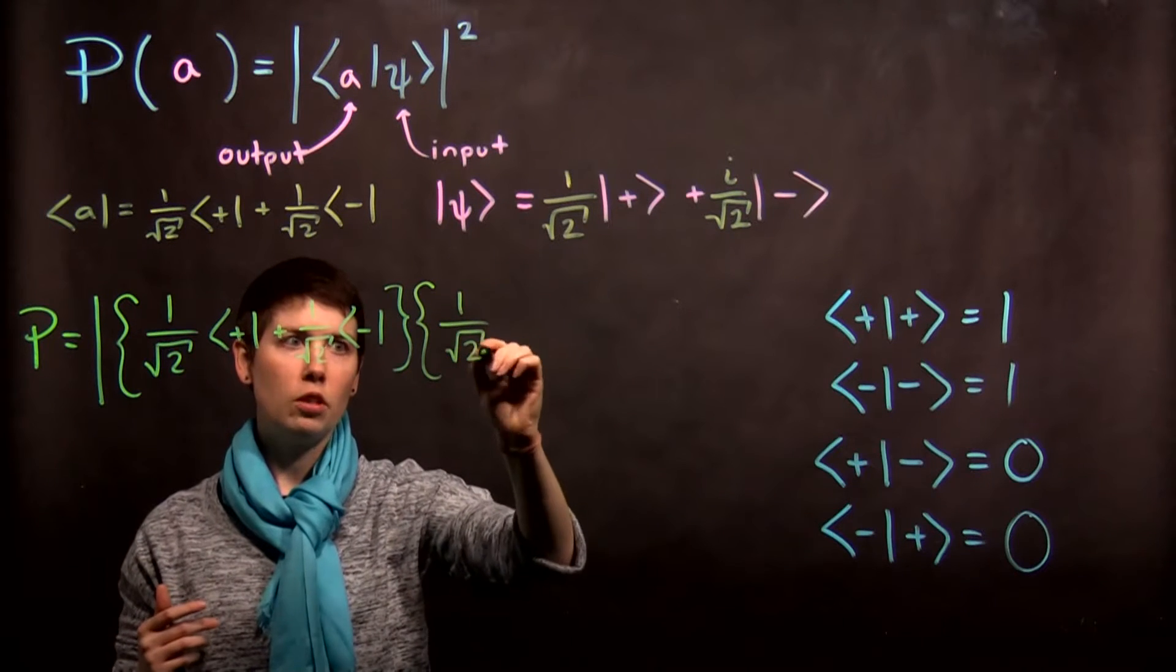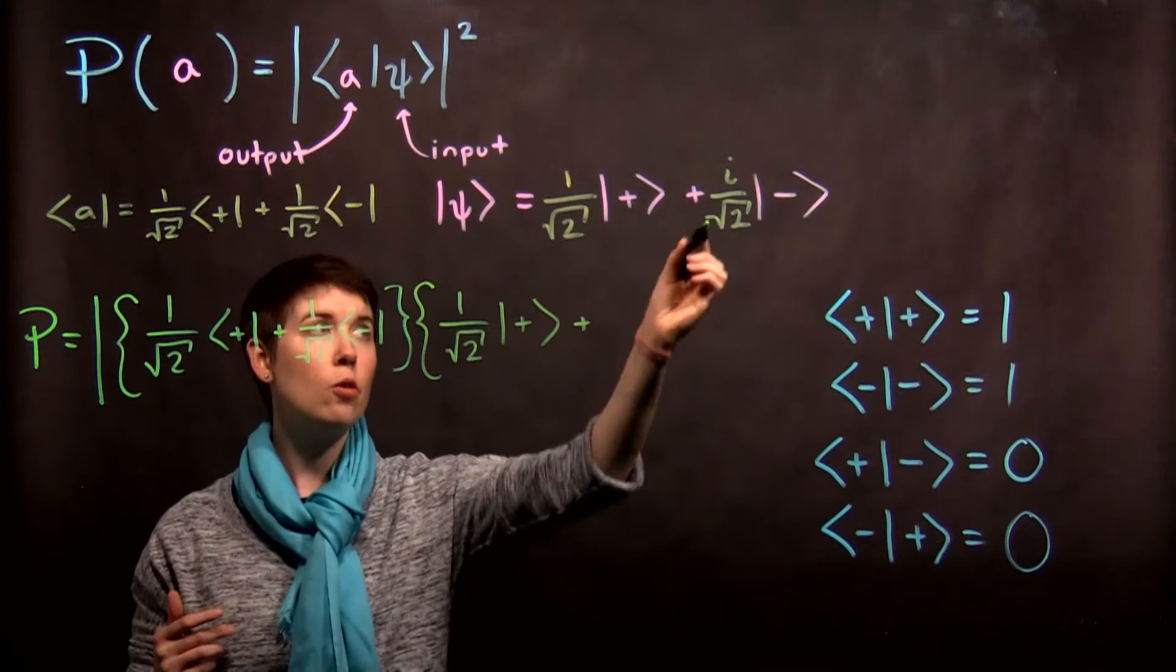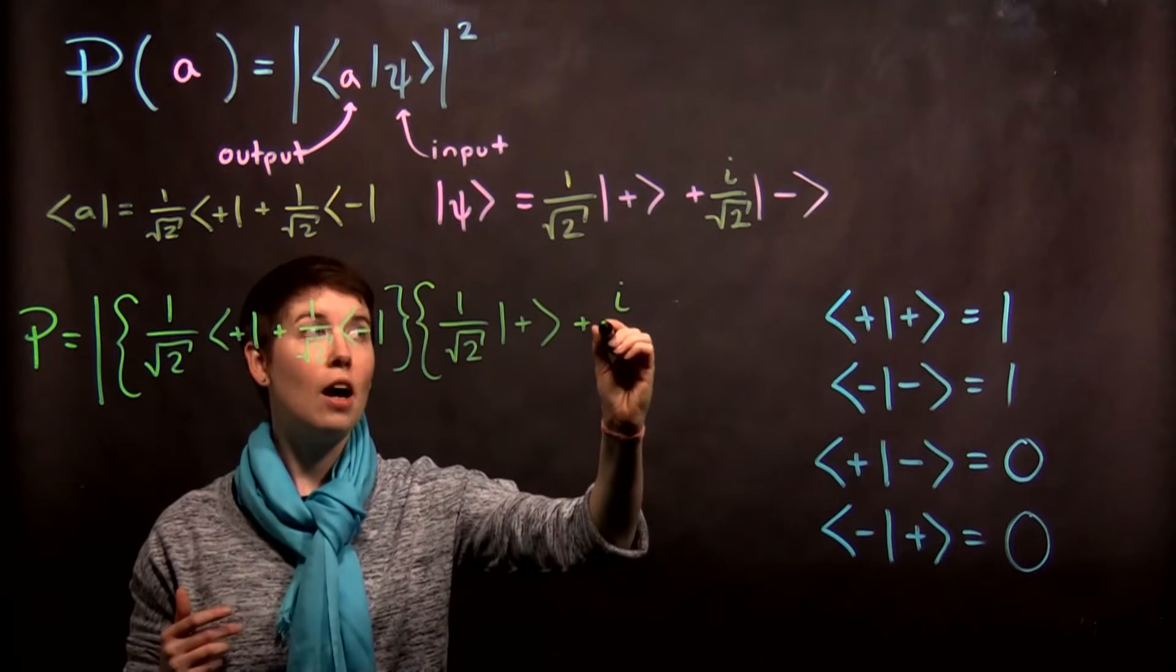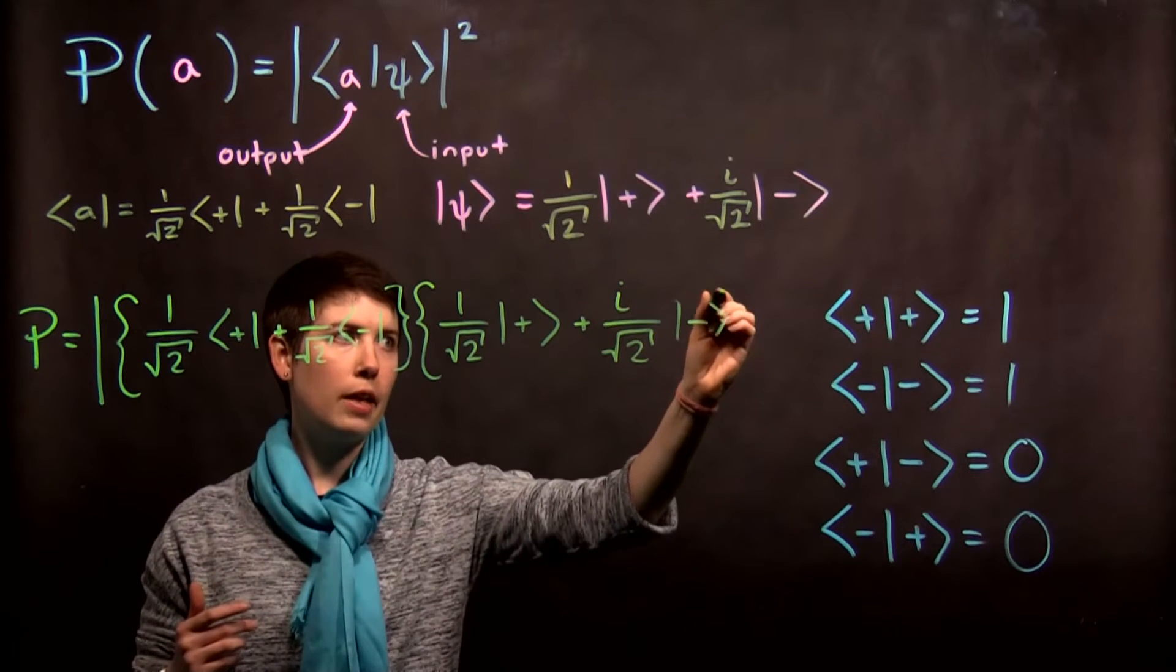So be careful about not dropping all of these scalars. They're important. And notice that now we have an i, that this is going to be complex.